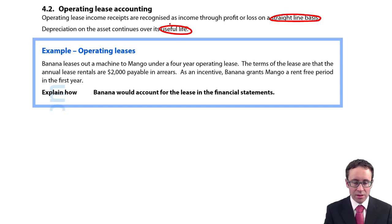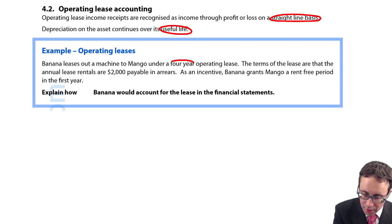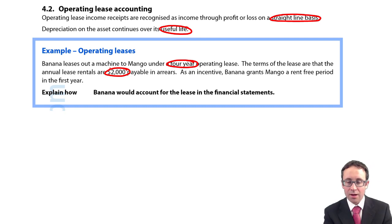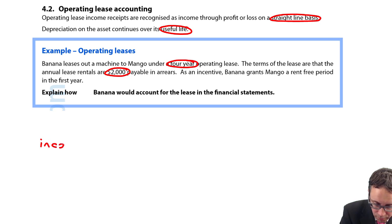Okay here for now I'm just concerned with the accounting treatment. In terms of the lease there are annual lease rentals of $2,000 payable in arrears. So we have four years, $2,000 in the payments and then as an incentive Banana the lessor grants Mango a rent-free period in the first year.